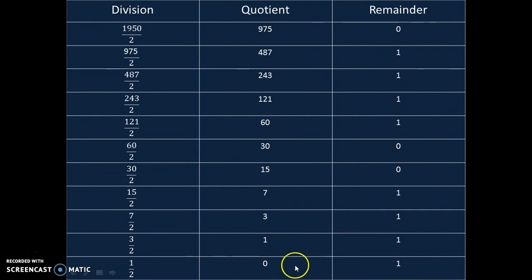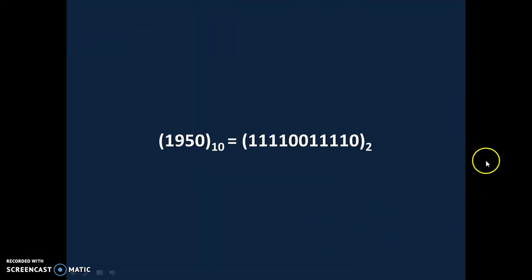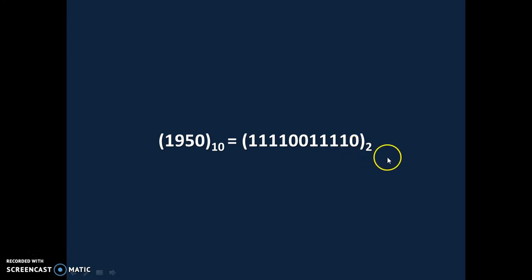Once again we have reached our final destination — quotient equals 0, so we stop the process. The first remainder is the LSB (least significant bit) and the last is the MSB (most significant bit). We write the number reading remainders from MSB to LSB. So our final answer is 1950 base 10 equals 11110011110 base 2.